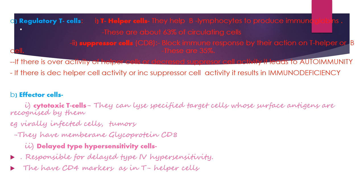Effector T cells are of two types: cytotoxic T cells and delayed-type hypersensitivity cells. Cytotoxic T cells can lyse specified target cells — such as virally infected cells or tumors — whose surface antigens they recognize; they carry membrane glycoprotein CD8. Delayed-type hypersensitivity cells are responsible for type 4 hypersensitivity and carry CD4 markers, like T helper cells.